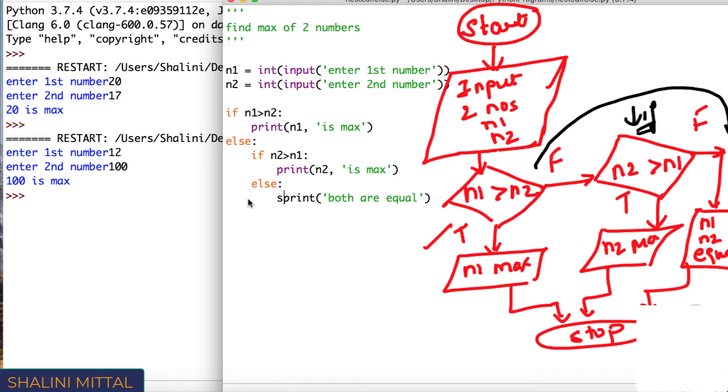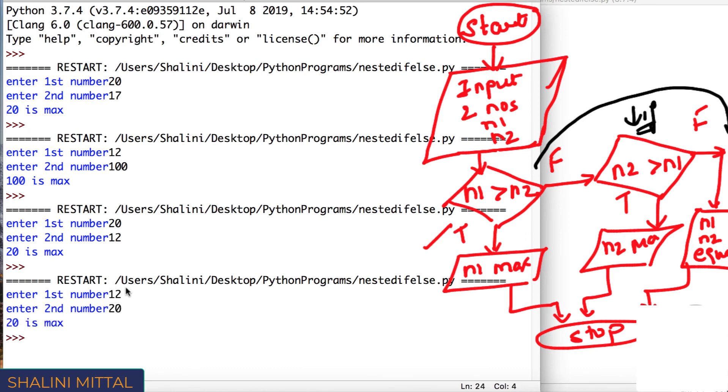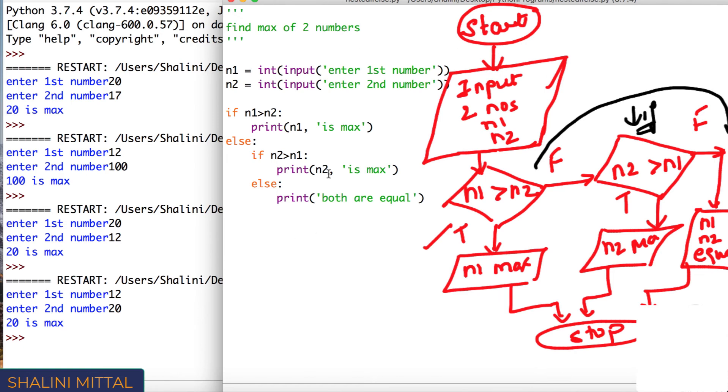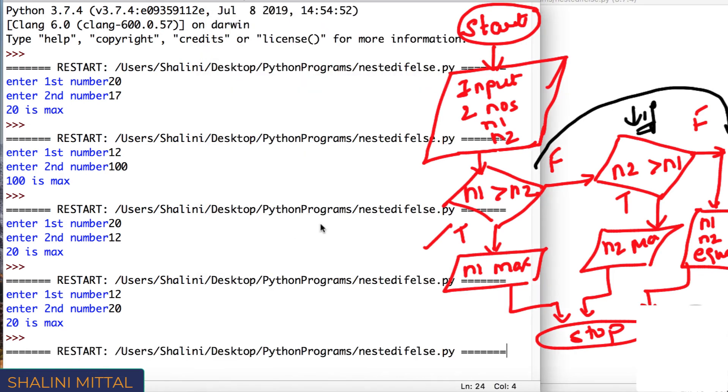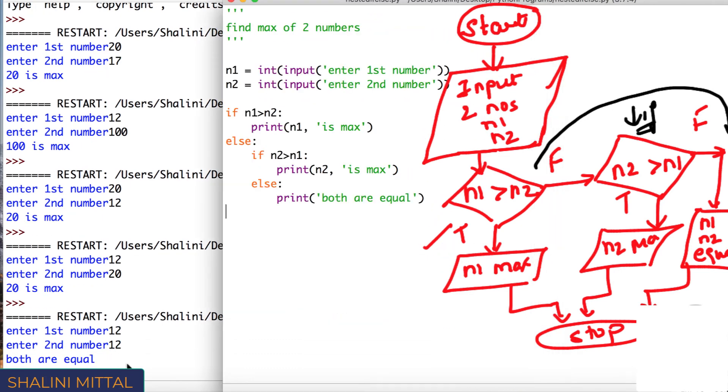So if I save this, if I run, enter first number 20, enter second number 12, 20 is max. I run it again, enter the first value is 12, second value is 20, 20 is max, no issues. If I run it again, enter the first number is 12, second number is 12, you can see it prints both are equal.